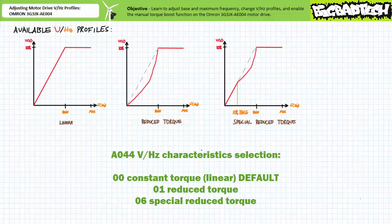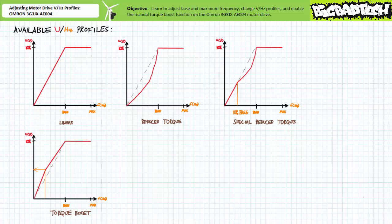To change among the available volts per hertz profiles, an operator needs to change extended function parameter A044. The volts per hertz characteristic selection has three available options: 00, the default, is constant torque — a linear volts per hertz ratio; 01 is a reduced torque profile; and 06 is a special reduced torque function. The fourth volts per hertz profile is a user customizable modification of the linear volts per hertz profile called the manual torque boost function, which allows an operator to manually select a steeper initial applied voltage slope at lower excitation frequencies for the purposes of establishing an initial burst of current at low speeds.